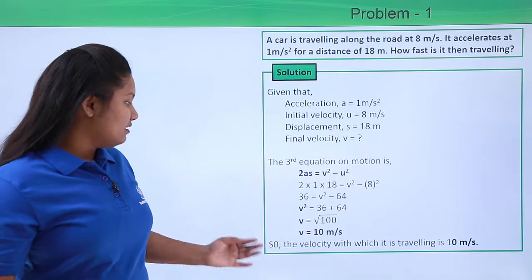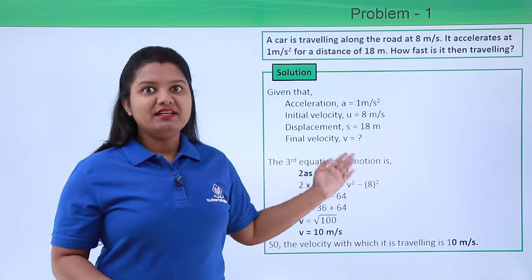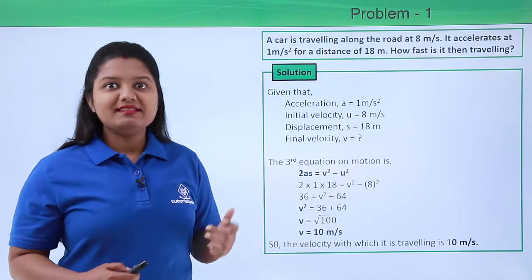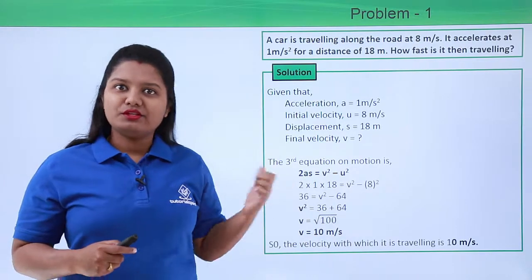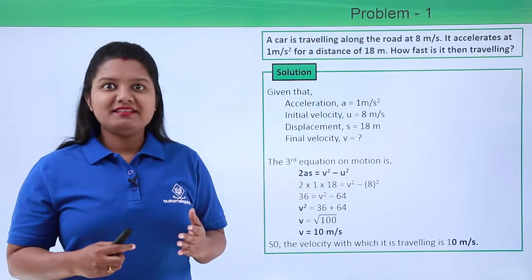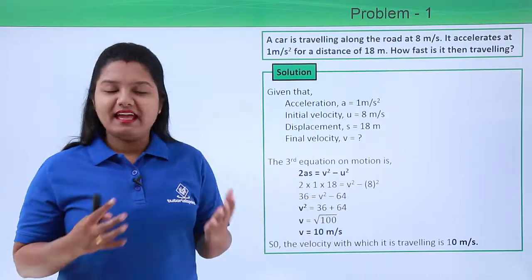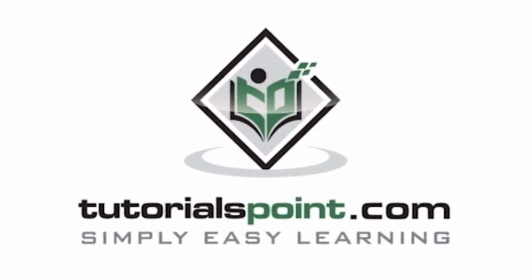So our final velocity is 10 meters per second. The velocity with which it is then traveling is 10 meters per second. I hope you have understood the solution of this problem and you will be able to solve similar problems. Thank you.